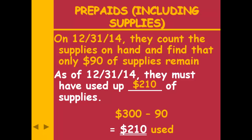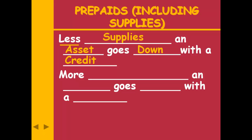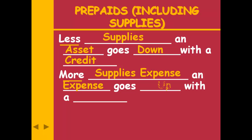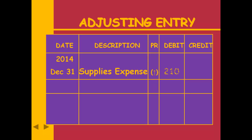I have less supplies, which is an asset going down — assets go down with a credit. When I use up an asset, it becomes an expense. So I have more supplies expense, which is an expense going up with a debit. My adjusting entry is a debit to supplies expense and a credit to supplies for $210.